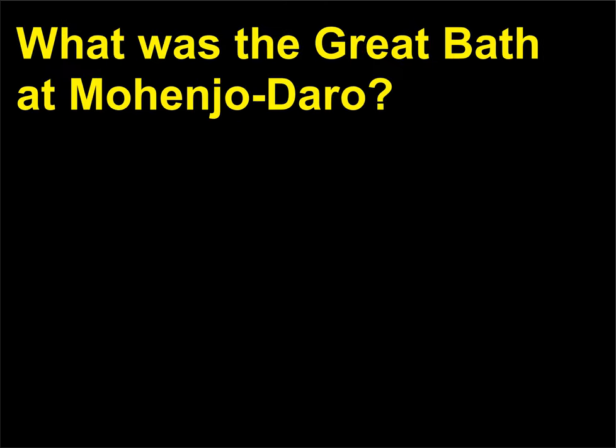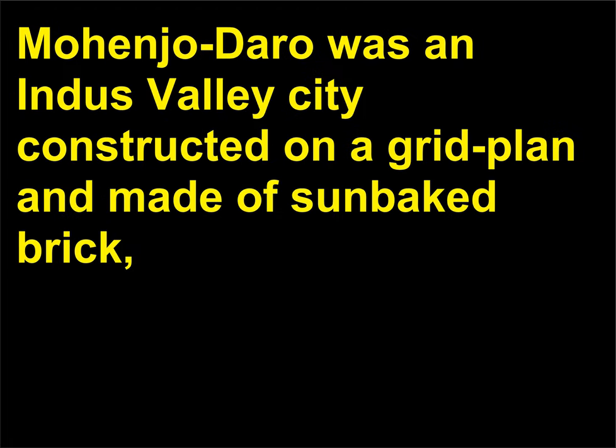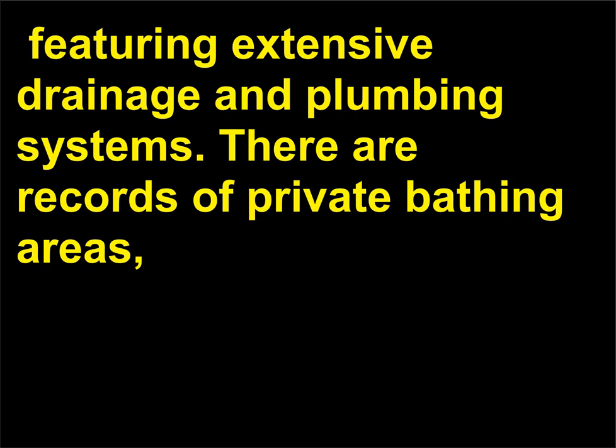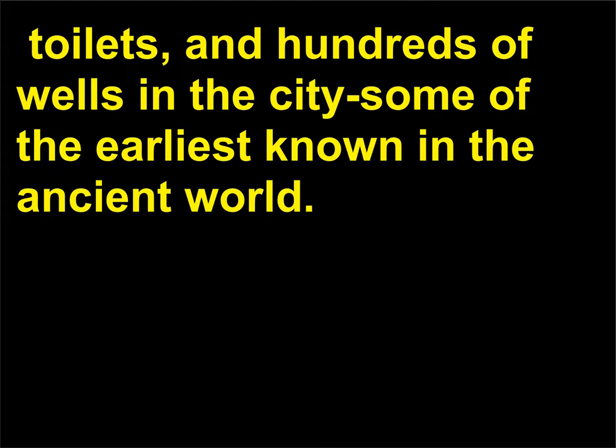What was the Great Bath at Mohenjo-Daro? Mohenjo-Daro was an Indus Valley city constructed on a grid plan and made of sun-baked brick, featuring extensive drainage and plumbing systems. There are records of private bathing areas, toilets, and hundreds of wells in the city — some of the earliest known in the ancient world.